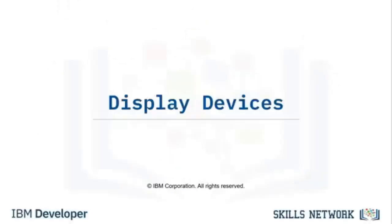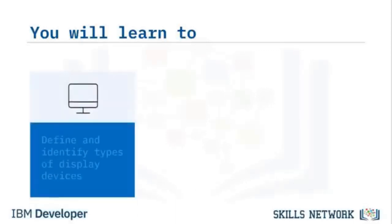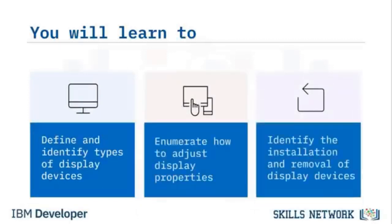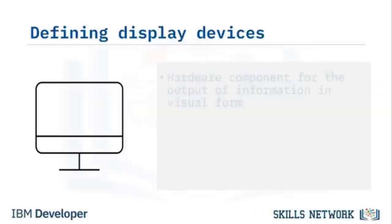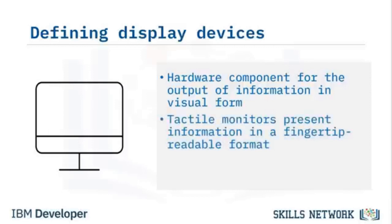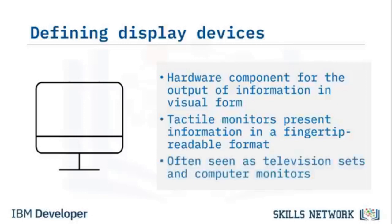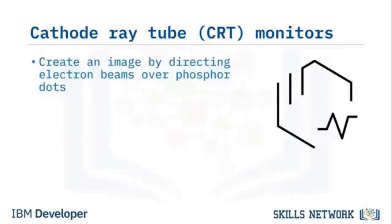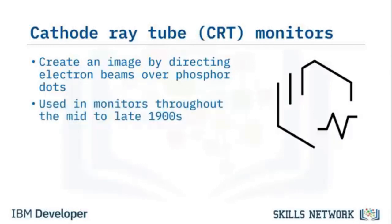Welcome to Display Devices. A display device is a hardware component for the output of information in visual form. Visually impaired people can choose a tactile monitor that presents information in a fingertip-readable format. Common display applications include television sets and computer monitors. A cathode ray tube, or CRT monitor, is an analog device that creates an image by directing three electron beams over millions of phosphor dots. CRT monitors were commonly used through the mid-to-late 1900s.